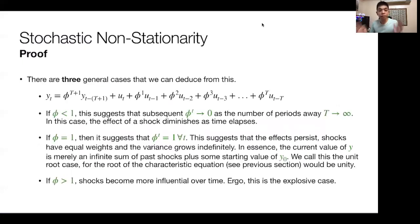There are three general cases that we can deduce from this equation. One is that if phi is less than 1, this suggests that the subsequent phi approach 0 as the number of periods away, so as t goes to infinity. And in this case, the effect of a shock diminishes as time elapses. This is quite normal, and this is the behavior we'd like to expect.